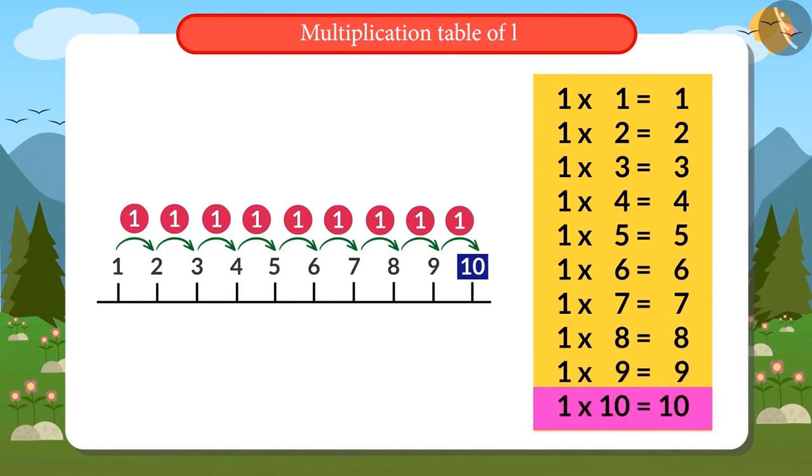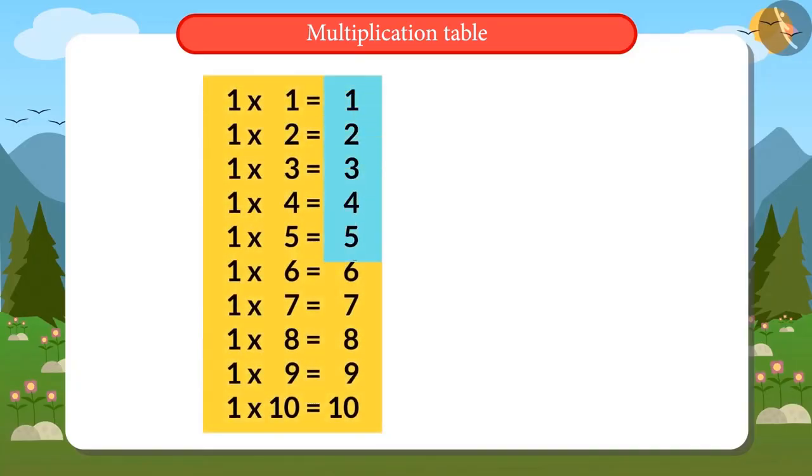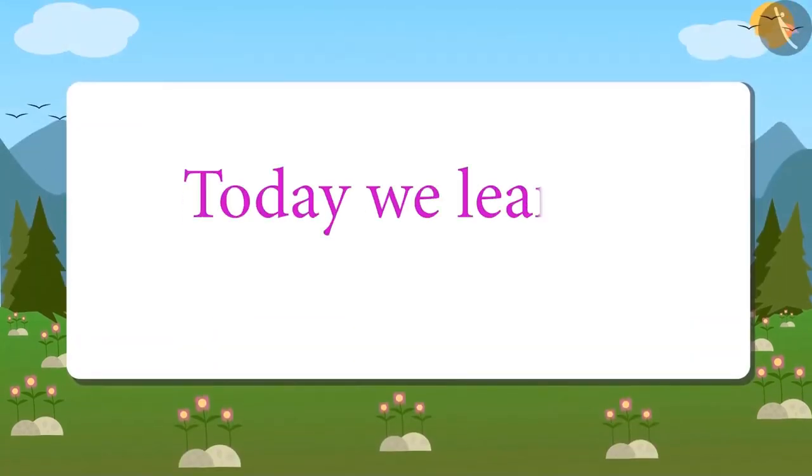1×10 = 10. Oh, this means that table of 1 is counting from 1 to 10. Today, we learned about the multiplication table of 1.